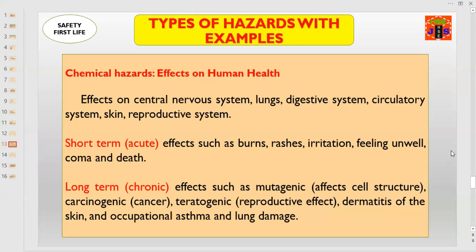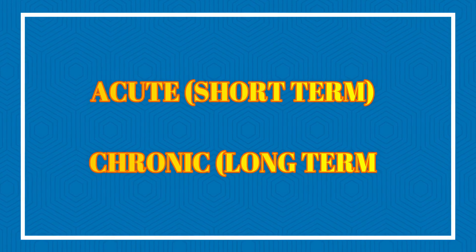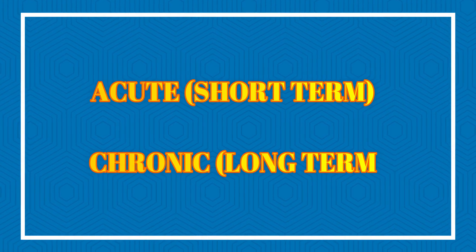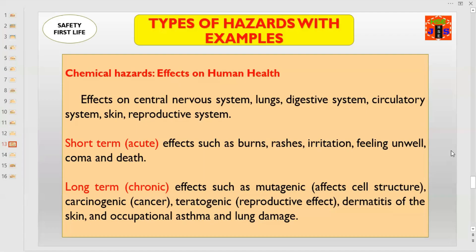Remember, the effects of chemical hazards are acute — meaning short-term — and chronic — meaning long-term. First, we'll see the short-term effects of chemical hazards. Examples include burns, rashes, irritation, feeling unwell, coma, and in some cases the effect is the end of life — death.